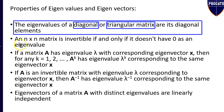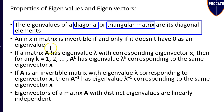Property 2 states that an n by n square matrix is invertible if and only if it does not have 0 as an eigenvalue — that is, none of the eigenvalues lambda should be 0.